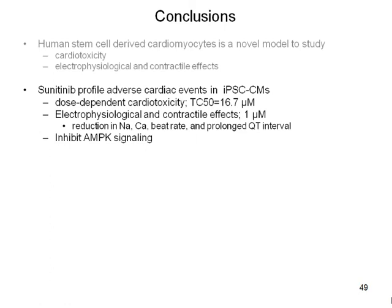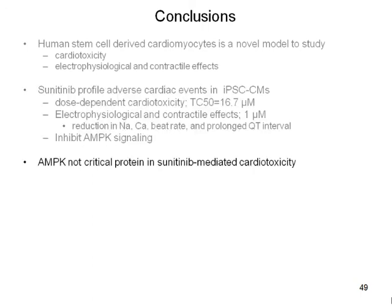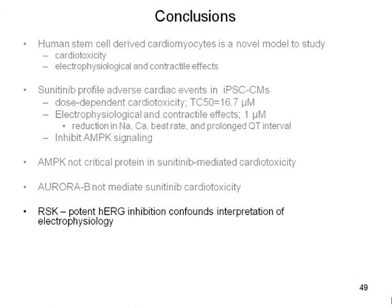We were able to profile sunitinib adverse cardiac events in this novel IPS-induced differentiated cardiomyocyte model. We saw dose-dependent cardiotoxicity with ATP depletion TC50 of around 16 micromolar, and electrophysiological and contractile effects as low as 1 micromolar, including relevant reductions in sodium and calcium, beat rate, and prolongation of the QT interval using the microelectrode array. Although sunitinib inhibited AMPK signaling, AMPK is not critical in mediating sunitinib cardiotoxicity, and Aurora is not a relevant mediator either.